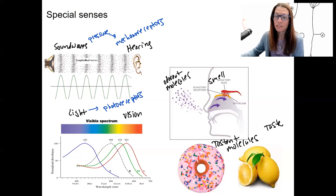Both of these, odorants and tastants, are chemicals. They're molecules. So they're going to be detected by chemoreceptors.